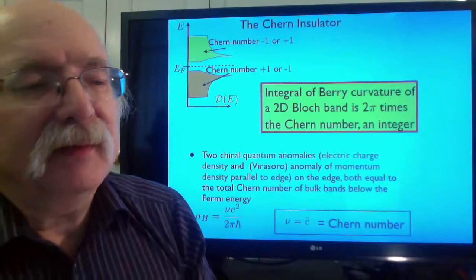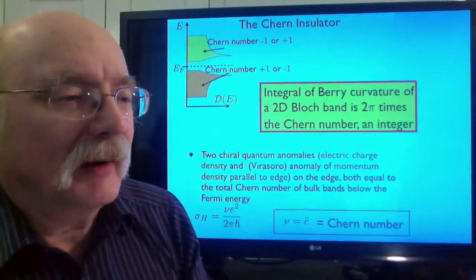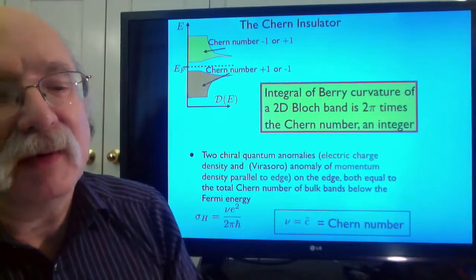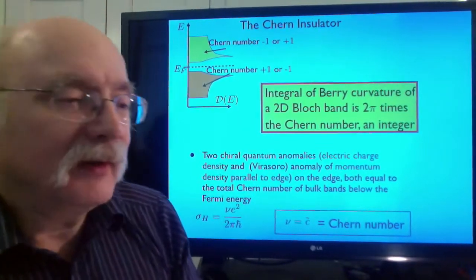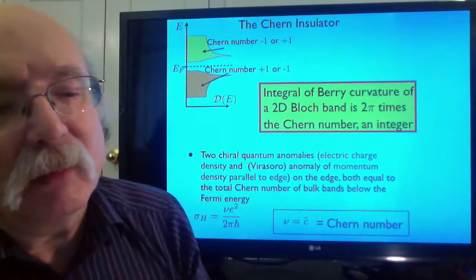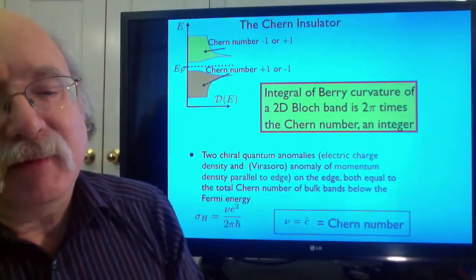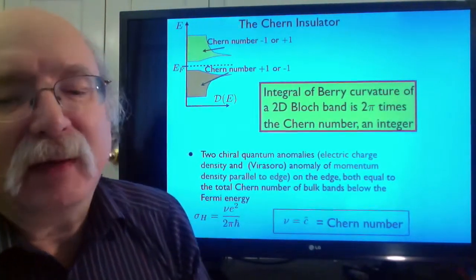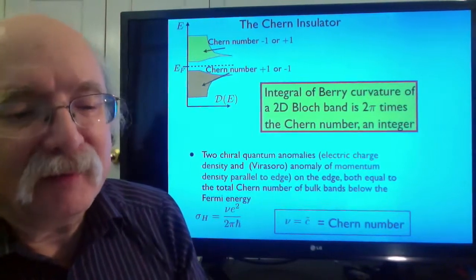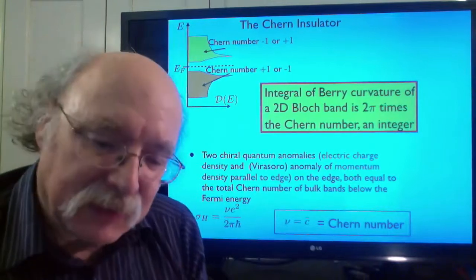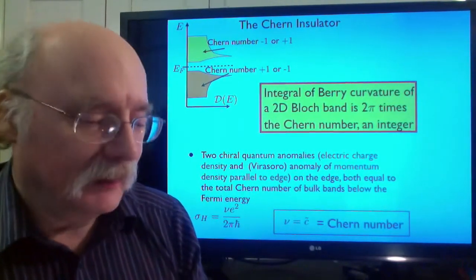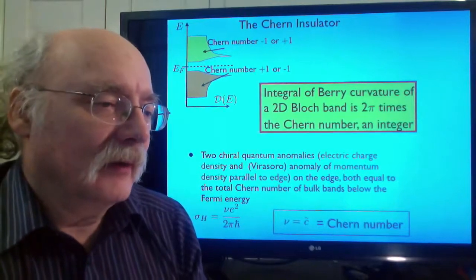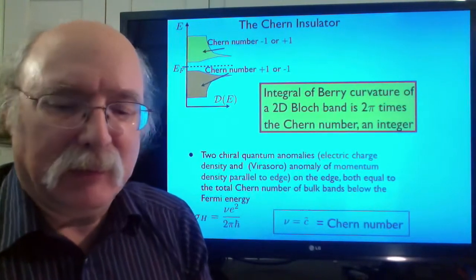In the bulk, this anomaly is connected with a net non-zero Chern number of the occupied bulk bands. The Chern number is given by the integral, it's an integer which is given by an integral of the Bloch state Berry curvature in the Brillouin zone, and it determines two fundamental chiral quantum anomalies. One of which is a failure of the charge conservation law of the edge state, taken by itself without reference to the bulk, and the other one is the failure of the conservation of momentum parallel to the edge, if you don't take into account the bulk. These are the quantum anomalies which are fundamental and give you a topological index, and in the case of these non-interacting fermion systems, they're both equal to the Chern number of the occupied bands.